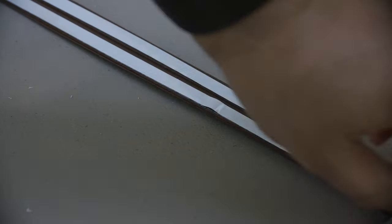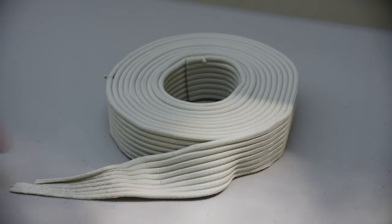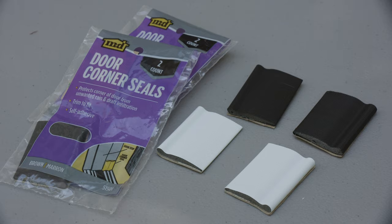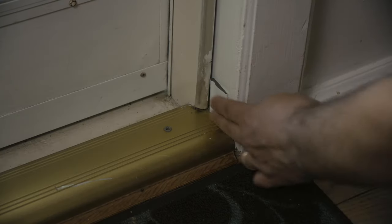The simplest to install is adhesive backed weatherstripping. Rope caulk is a good temporary fix which can be removed when the seasons change. If you have small gaps in corners you can use a piece of corner seal weatherstripping like this.